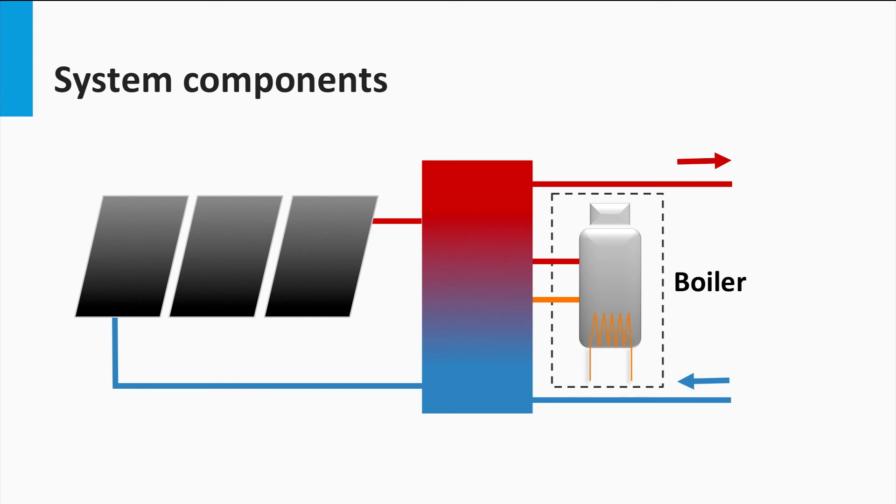Some systems include a boiler as a backup. Its main function is to provide the necessary energy when the solar power is not sufficient. It is basically a normal heater that adds the remaining heat needed to achieve the desired temperature. The boilers normally use either natural gas or oil to function.